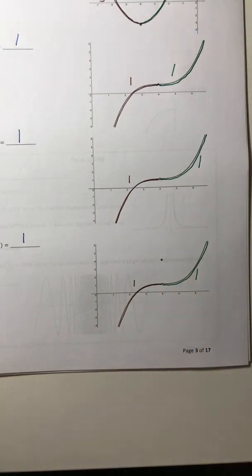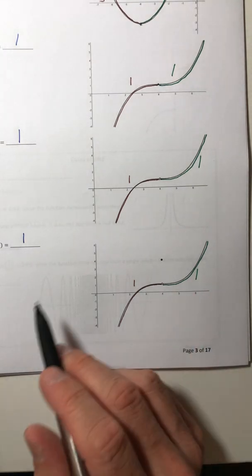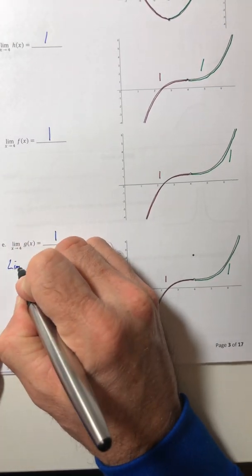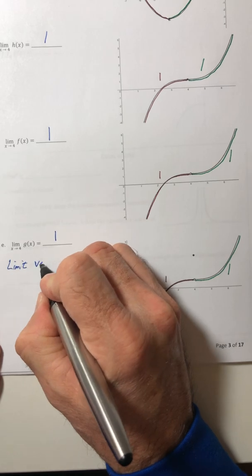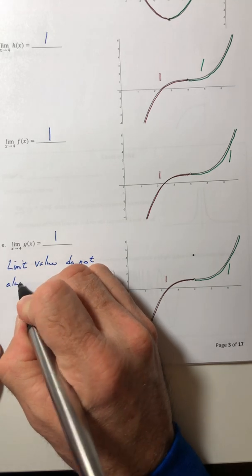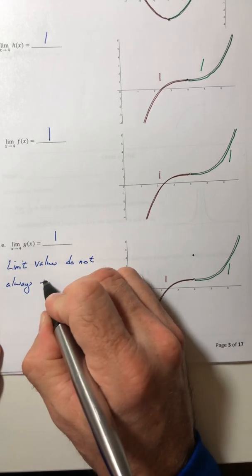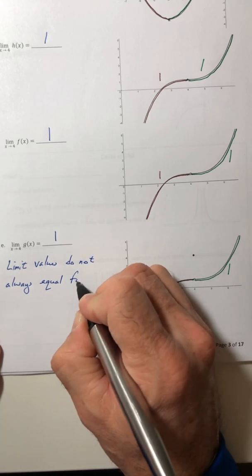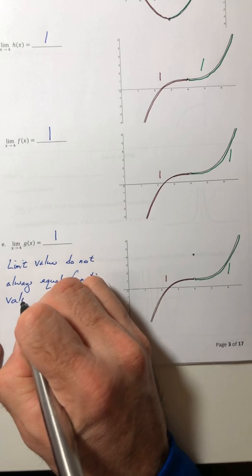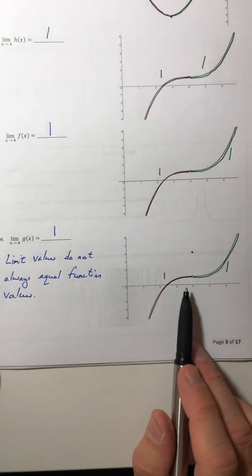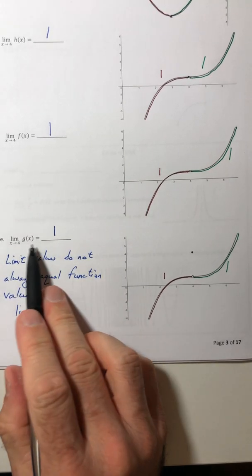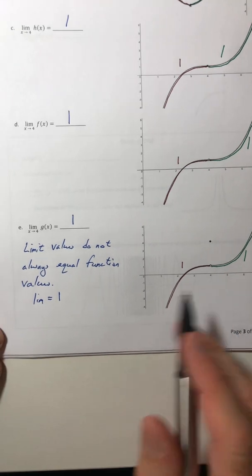So this is a really good example to illustrate a good point with these limits. Limit values do not always equal function values. Sometimes they do, but not all the time. As in this case, the limit value we said was one.